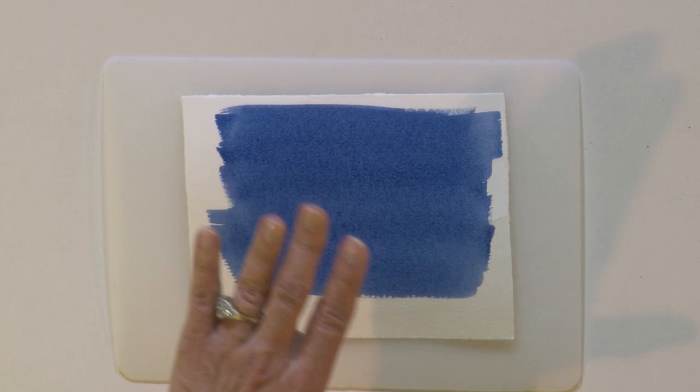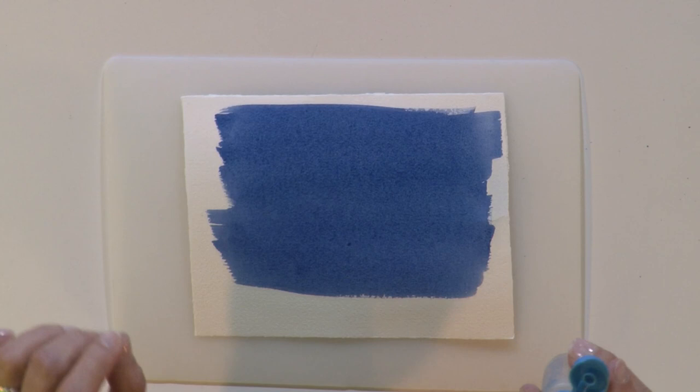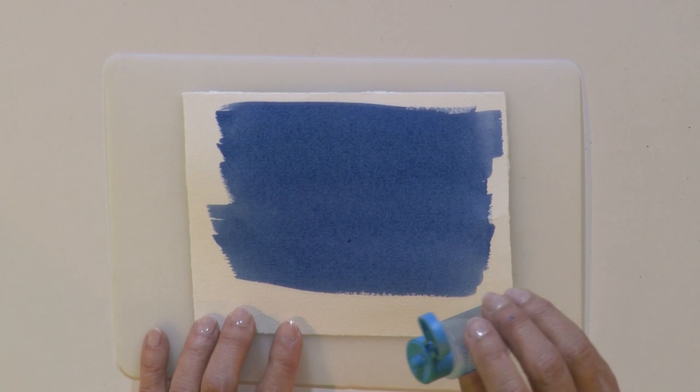Just as that paint is starting to soak into the paper, I'm going to use rubbing alcohol. You can get it in any drug store. I just put mine in a little container, and I'm going to drop it onto the wet paint.